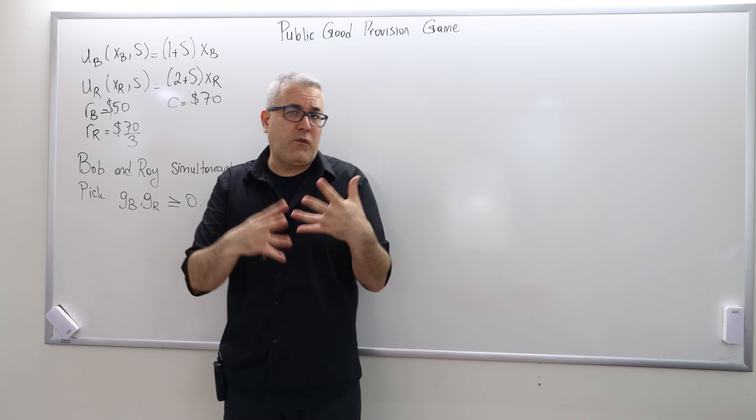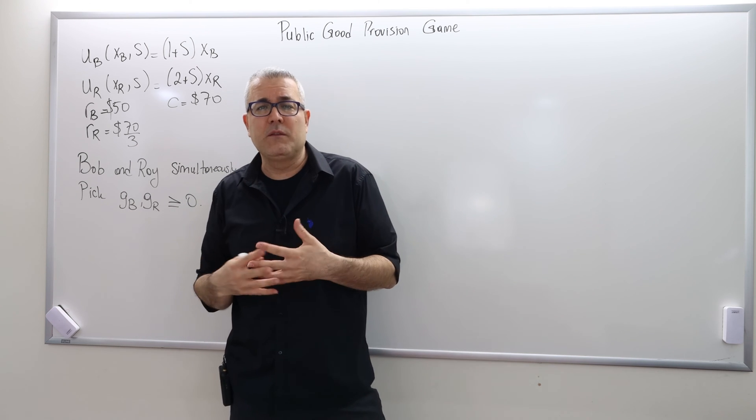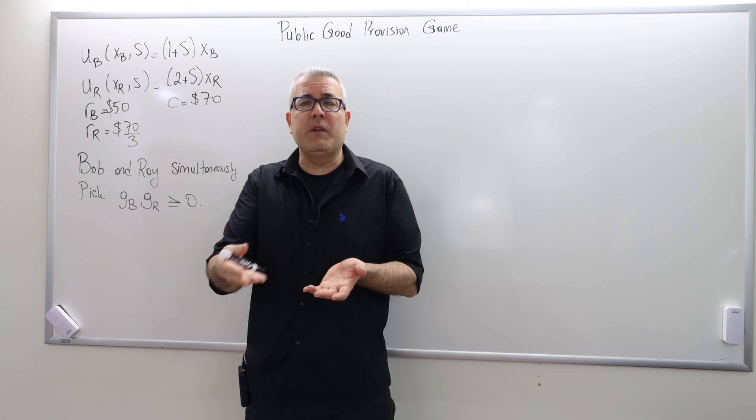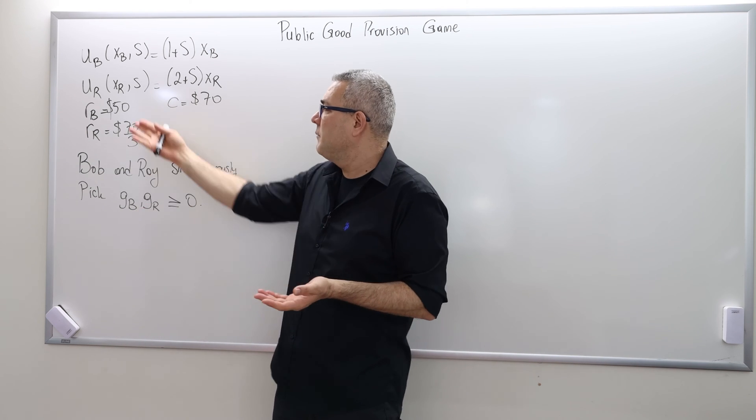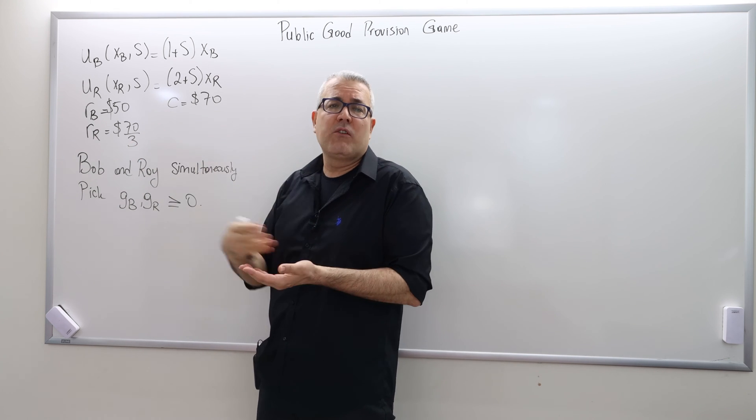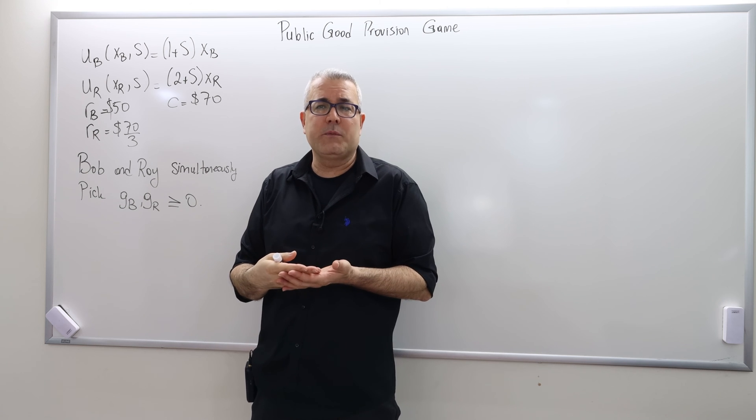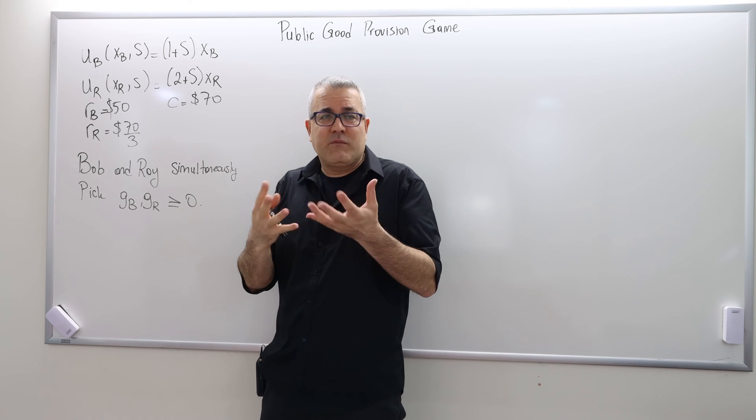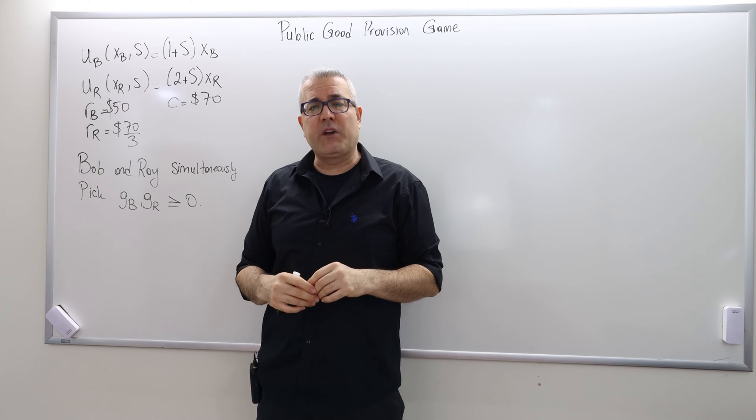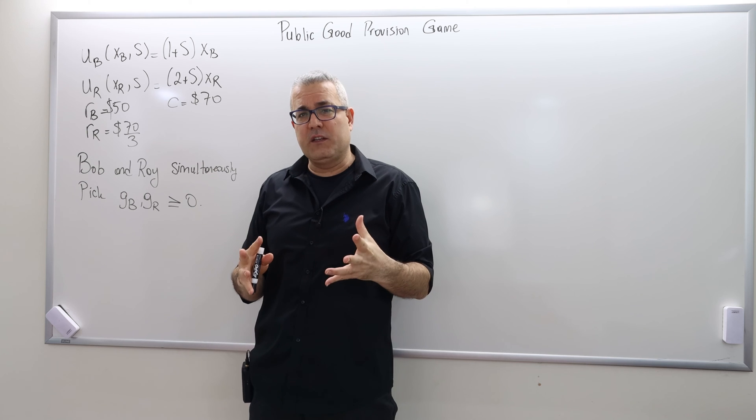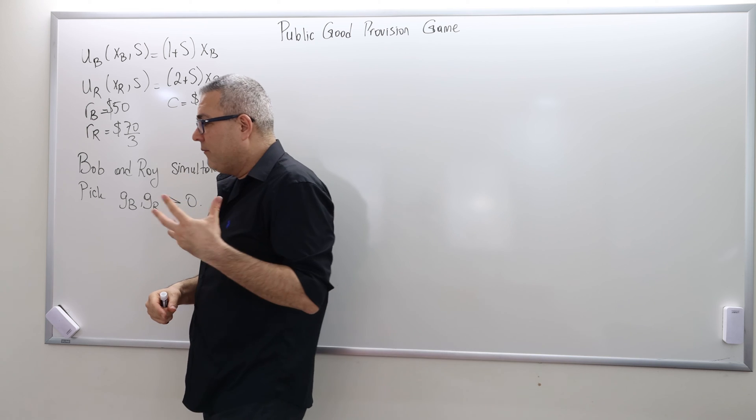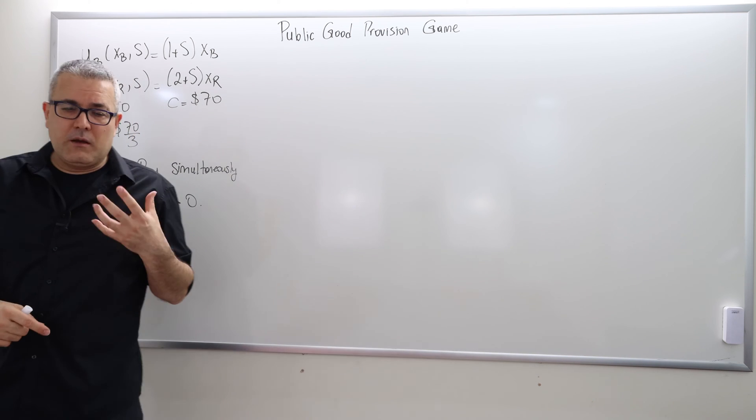But then the question is, out of all those infinitely many possible cost divisions, which one should they be following? Obviously Bob would like to pay as low as possible, and clearly Ray also wants to pay as low as possible. So how do they decide out of all those Pareto efficient ways of dividing the cost, which one should they stick to? Well, there are different ways to make that decision.